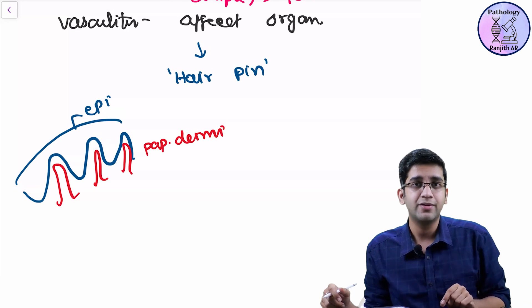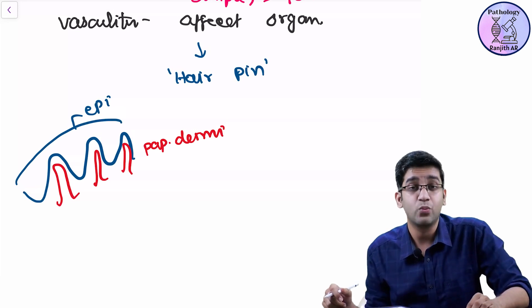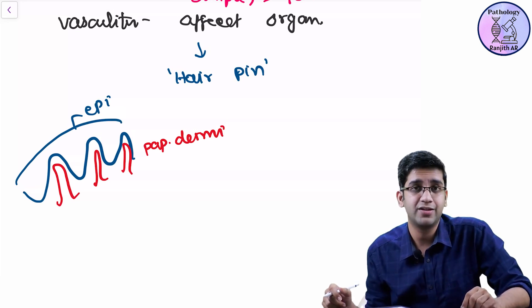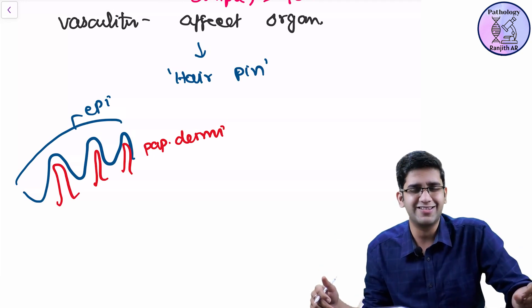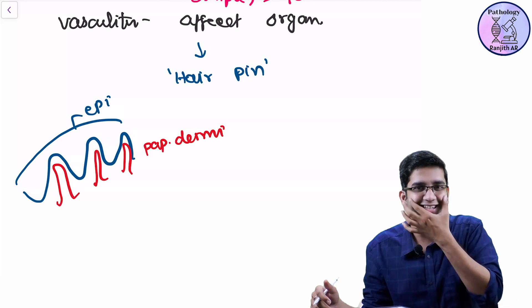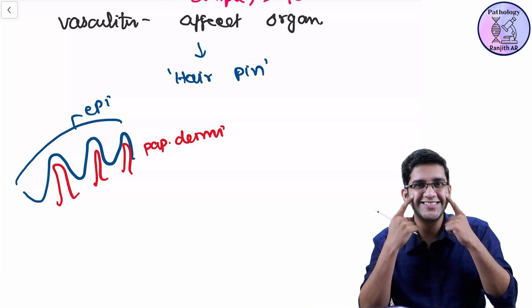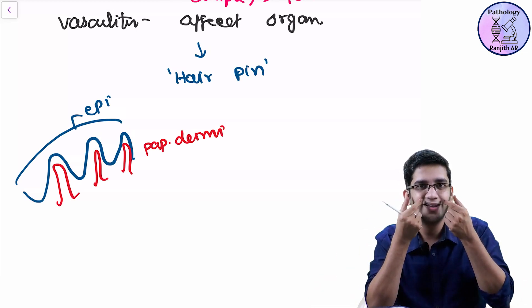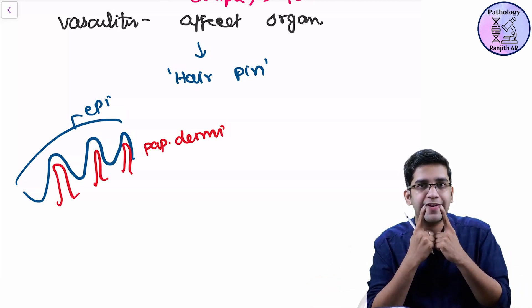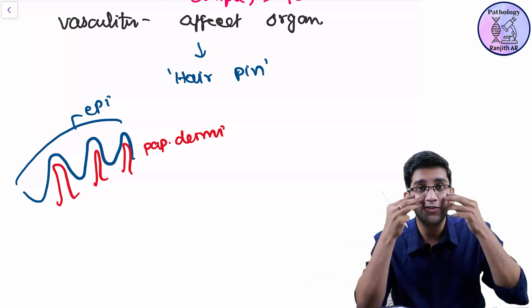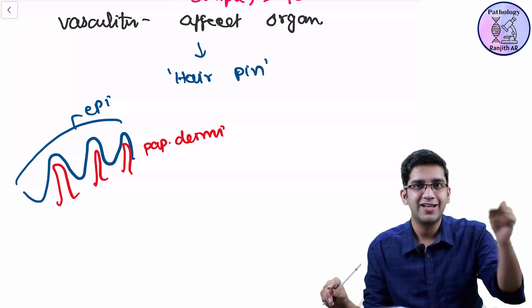Your query should be, then why skin? Why malar region of skin? Why not the entire skin? Simple reason. Touch here. You know the answer. Touch here. What do you have? Fat. Touch here. Do you have fat? No. Touch here. Lots of fat.